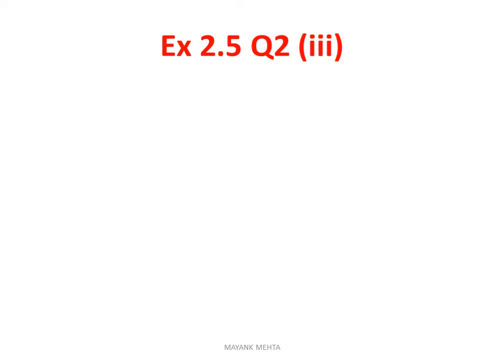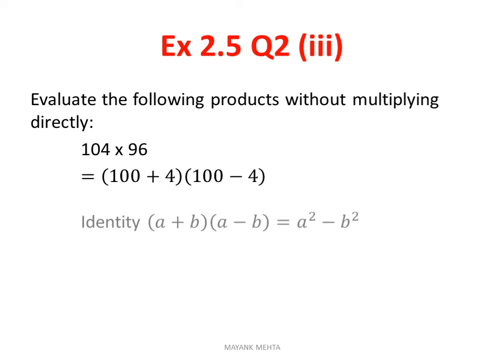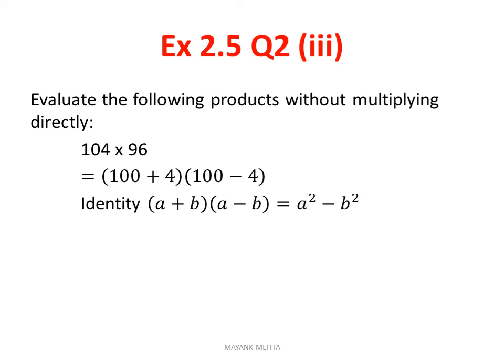Then I have taken the third question of the same. Evaluate the following product without multiplying directly. In this 104 into 96. Here look, one is 4 above 100 and the other is 4 below 100. So 100 plus 4 into 100 minus 4. This becomes our (a+b)(a-b) identity. So a² - b². Directly you can solve this. You will get your answer.